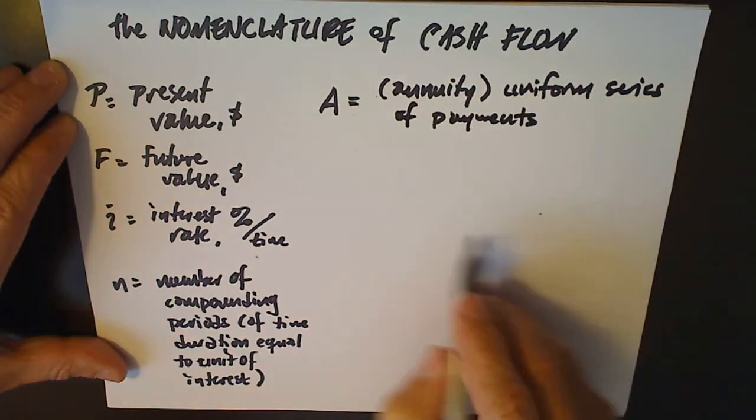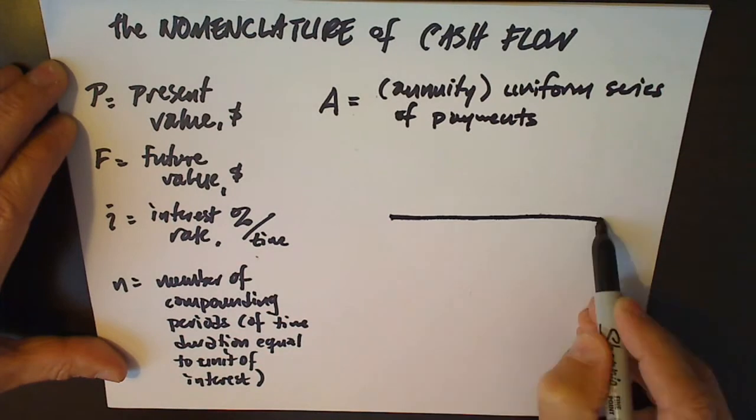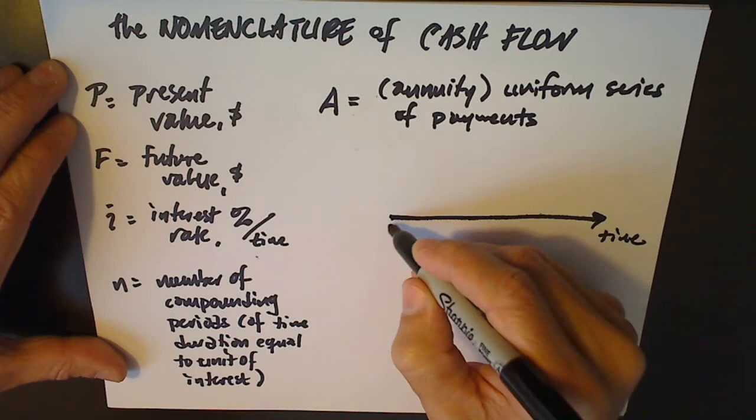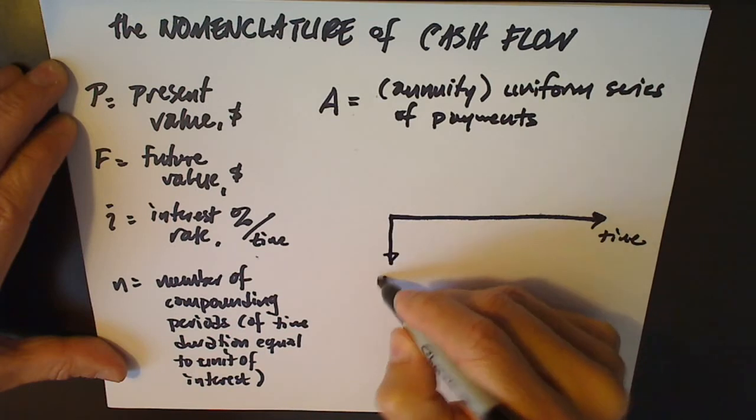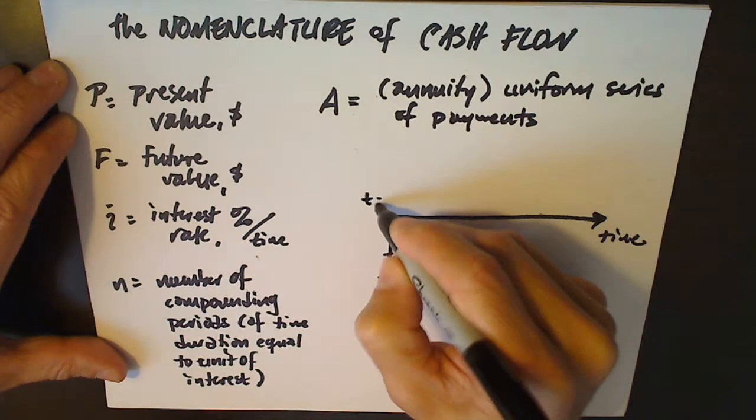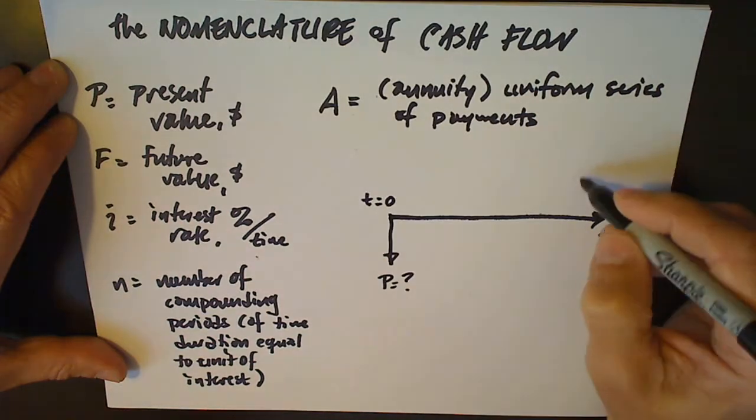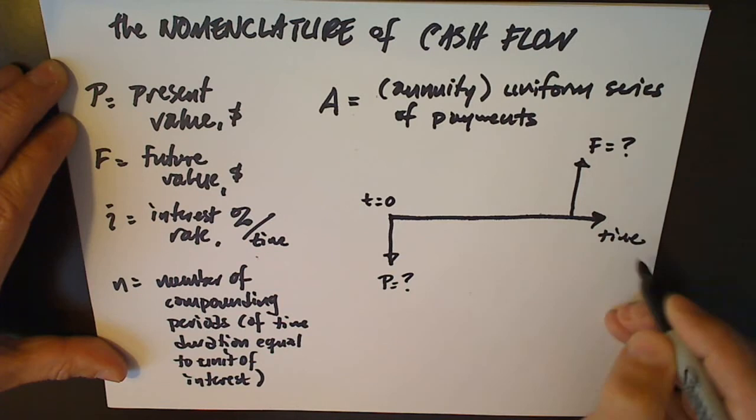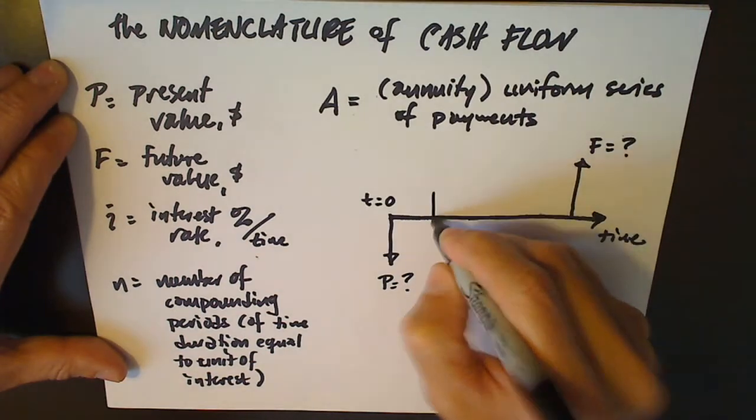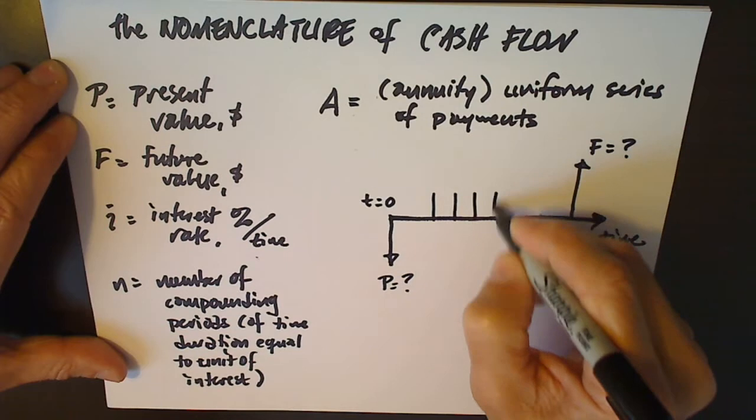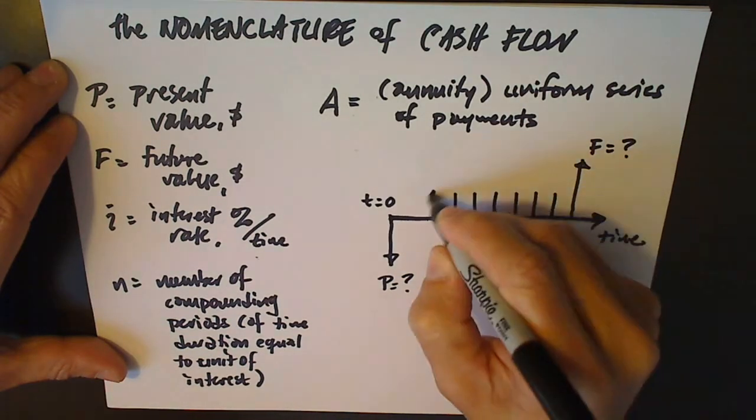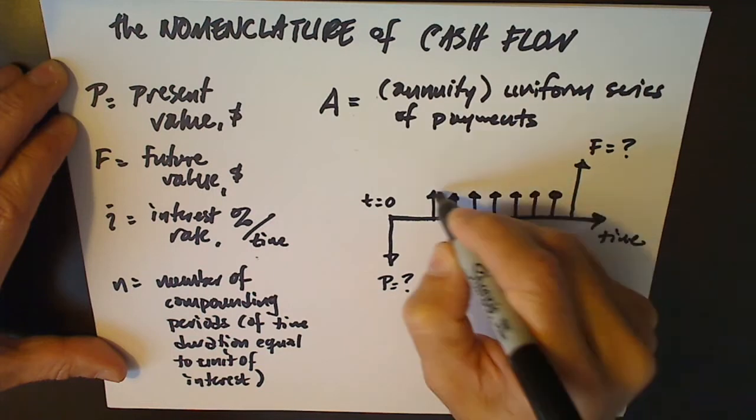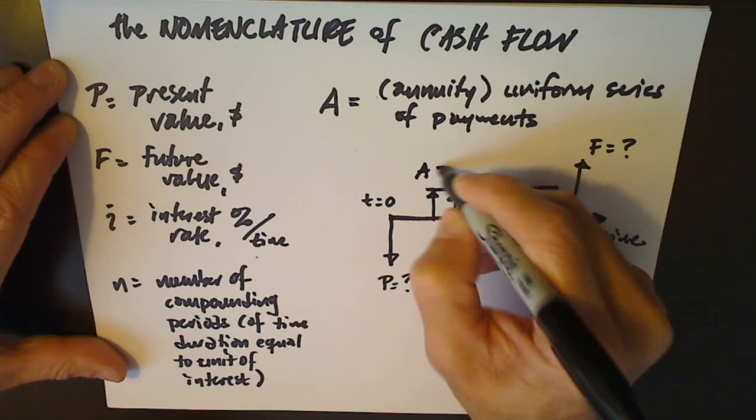So what does that look like on a cash flow diagram? Here's our time axis going into the future to the right, and this might be our present value, T equals zero. Some future value could be expressed to the right on the time axis. And A on our cash flow diagram looks like a uniform series. Each payment is the same, and they come at regular intervals.